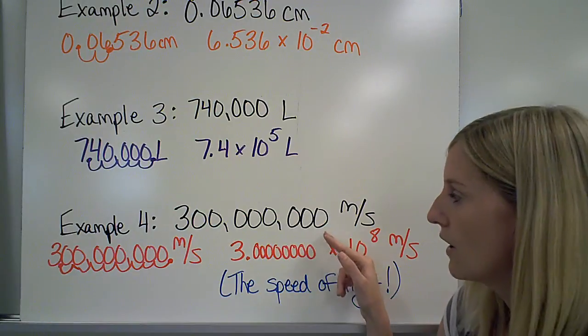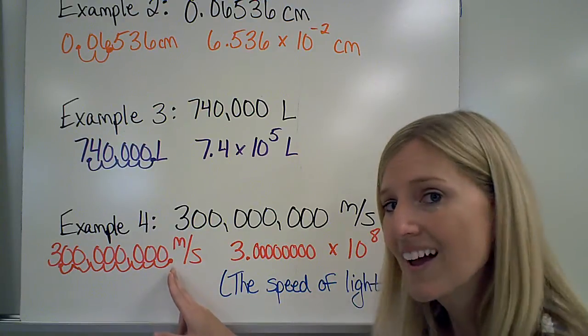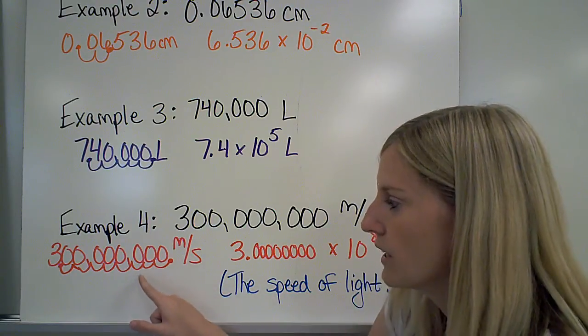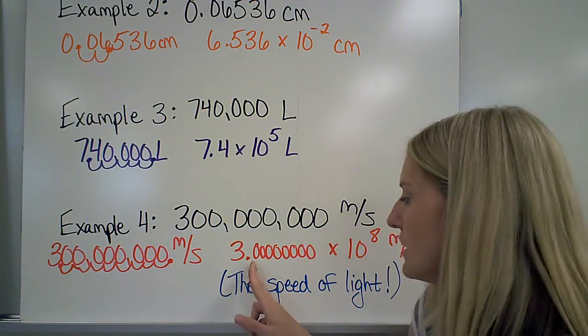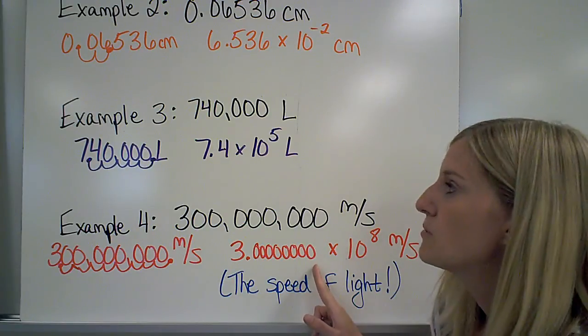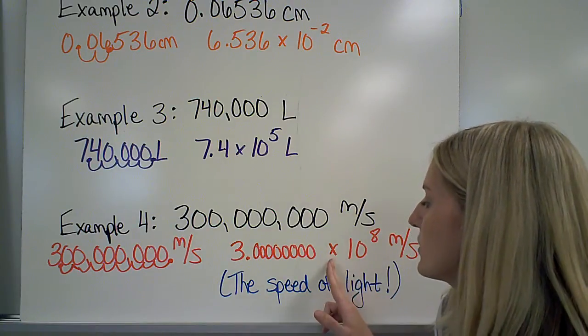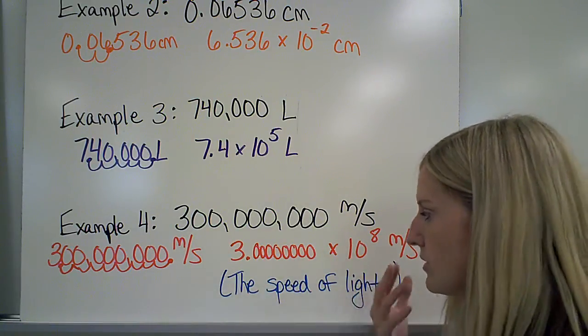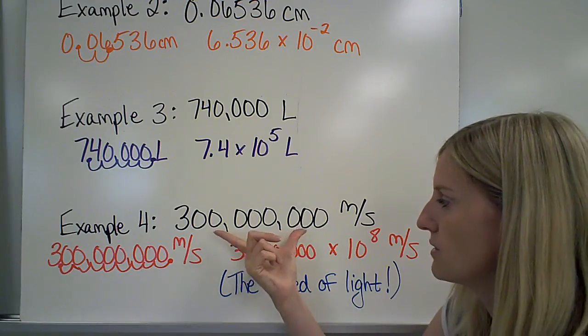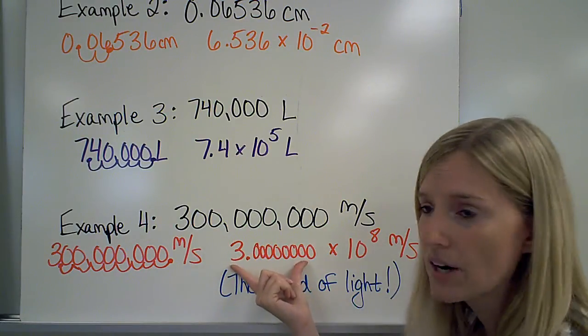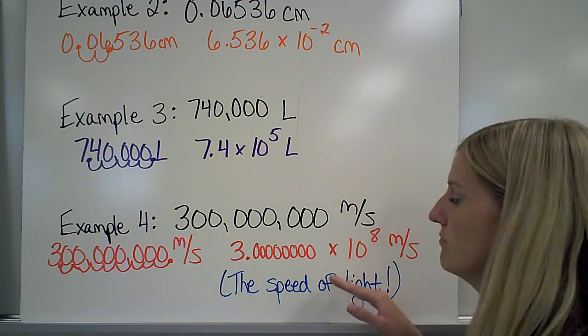Example 4. I have another really large number. There is no decimal point in it, so I have to draw it in myself and then move the decimal point all the way down until I get a number 1 through 10, which in this case is 3.0. Notice that I keep all the zeros there, just as I kept the 5, 3, 6 up here. You want to keep all of your digits. So I have that 3.00 times 10. I moved it 8 places, and my original number is much larger than my 1 through 10 number, so the decimal point stays positive. This, by the way, is the speed of light. Very fast.